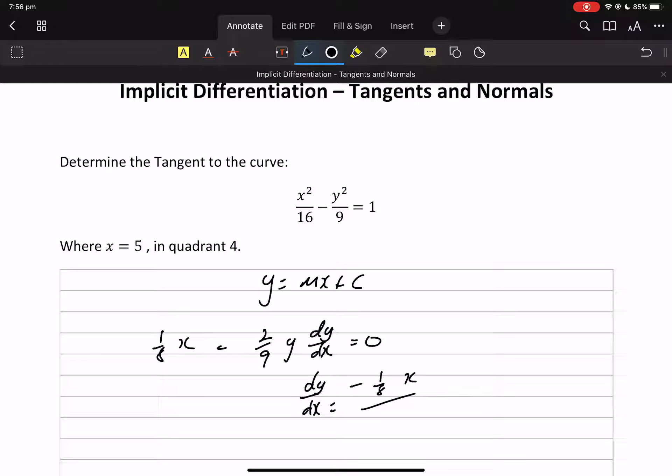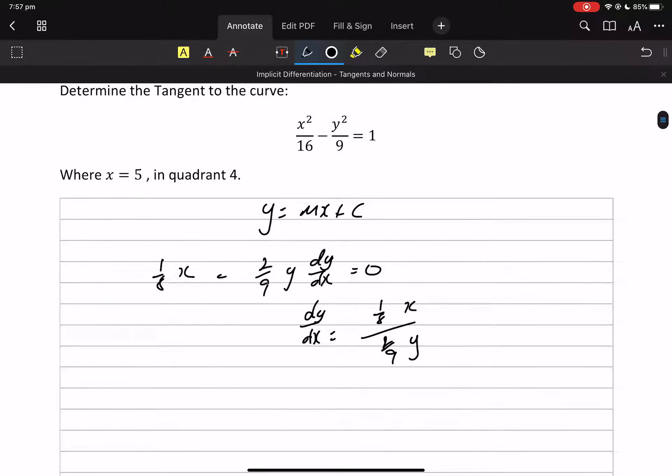When that comes over there's going to be a negative but the double negative will make that go. So what's 1 on 8? 1 divided by 8 divided by 2 divided by 9.